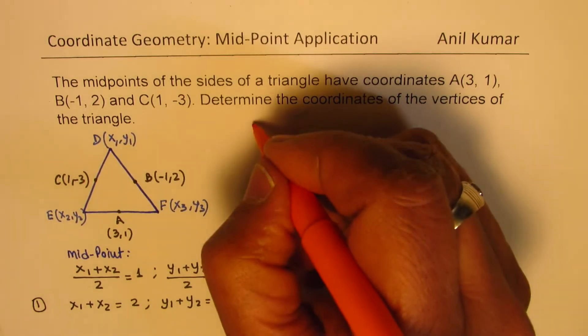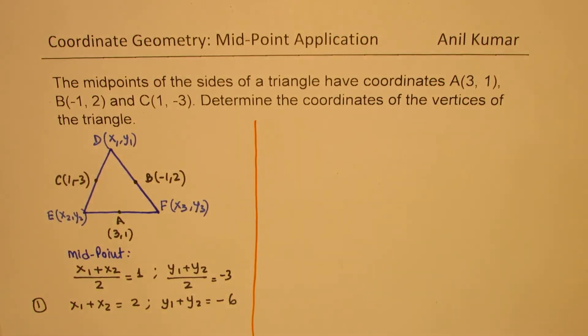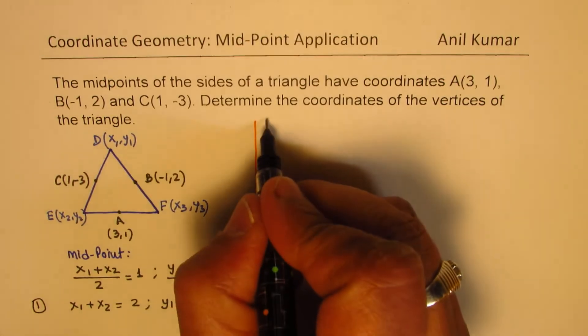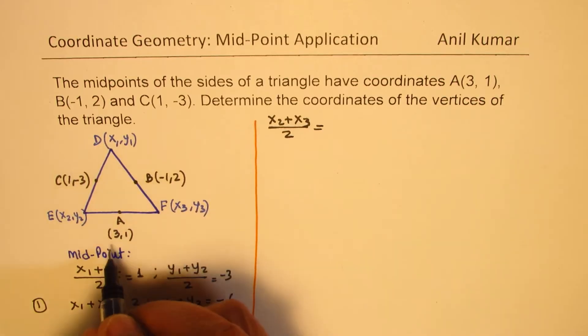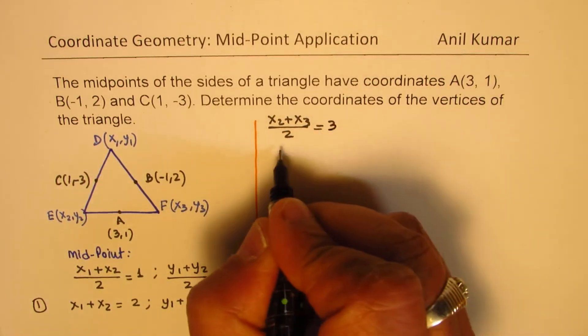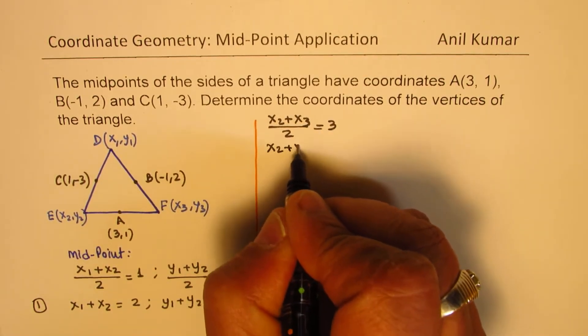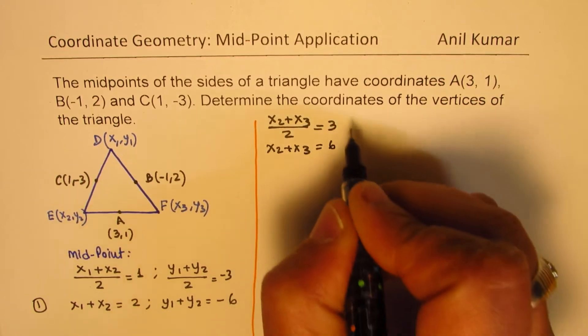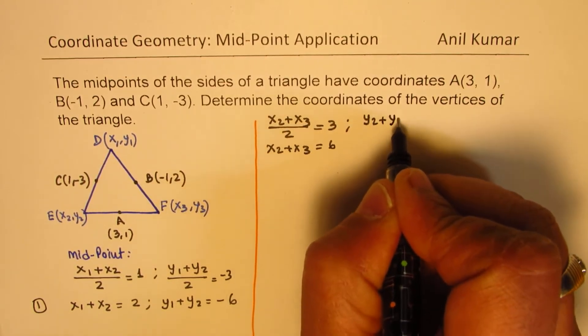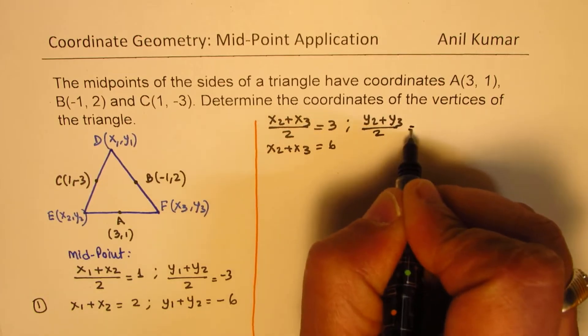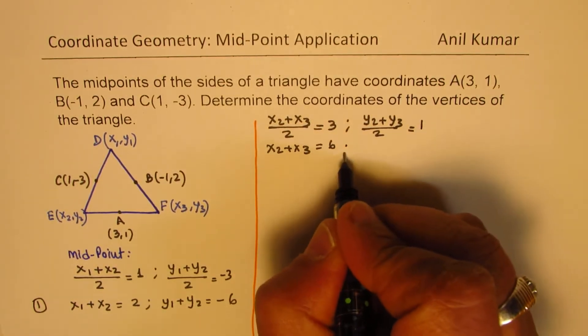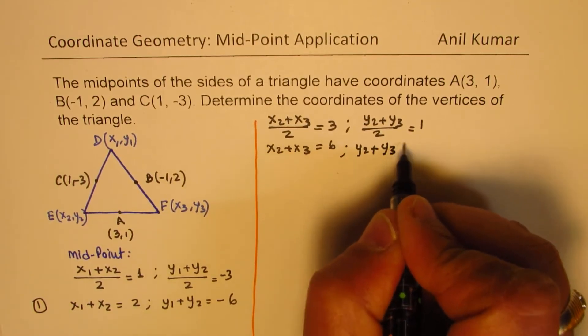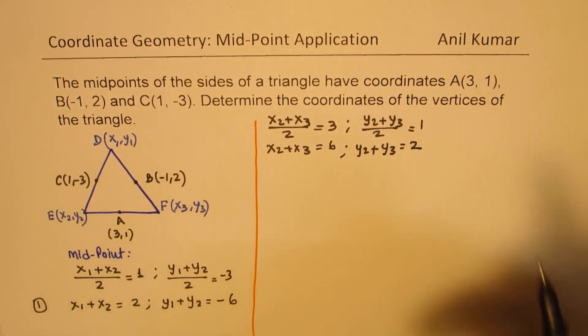So I get one equation relating x₁, x₂, and y₁, y₂. Well, I could do this for all the three points. So next time let's take these two. So we say (x₂+x₃)/2 is equal to 3. So that means x₂+x₃ is 6. And we have (y₂+y₃)/2 is 1. So we have y₂+y₃ equals to 2.